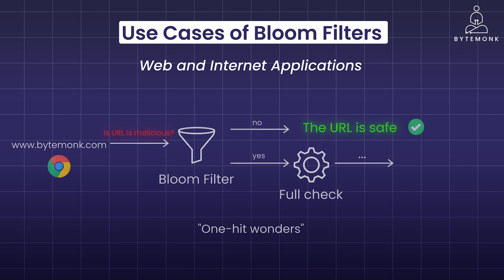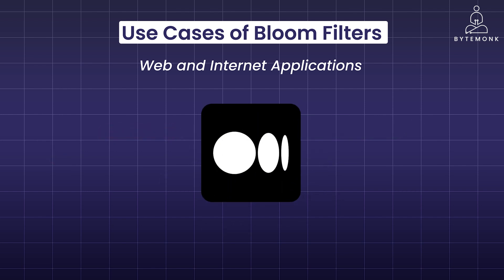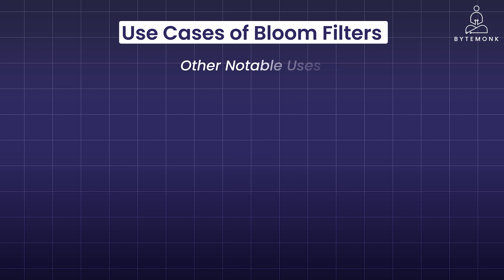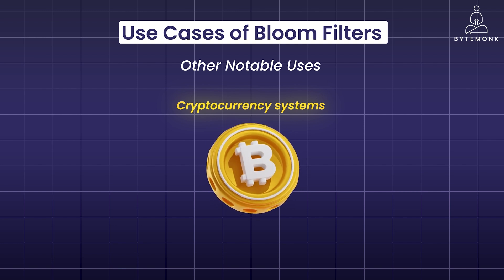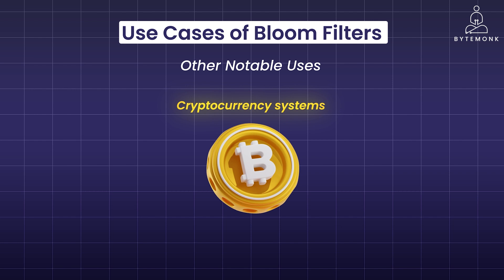Content recommendation systems like those on Medium leverage Bloom filters to prevent suggesting articles a user has already seen, enhancing content relevance. In cryptocurrency systems such as Bitcoin, Bloom filters are used to synchronize wallets and reduce the risk of DDoS attacks by filtering unnecessary data transmission. Network routers employ Bloom filters to manage IP addresses and prevent DDoS attacks efficiently. Moreover, spell checkers have evolved to use Bloom filters to verify words against a dictionary, quickly reducing the time to identify misspelled words.